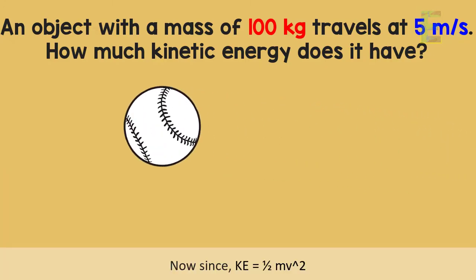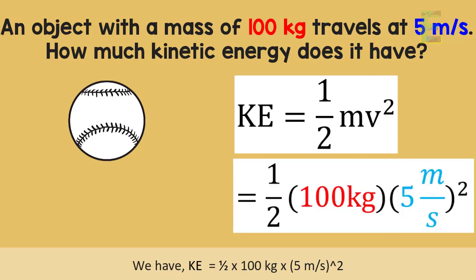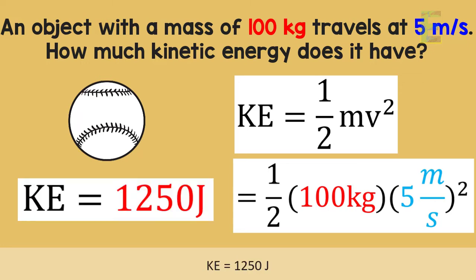Since KE is equal to one half mv squared, we have KE equal to one half times 100 kilograms times the square of 5 meters per second, which gives us the final answer of 1250 joules.